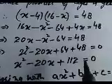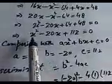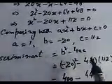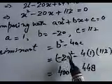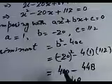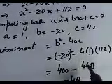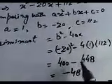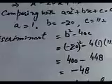Now we solve this equation to check if the situation is possible. Comparing with ax square plus bx plus c equal to zero: a equals 1, b equals minus 20, c equals 112. Now finding the discriminant: b square minus 4ac equals (minus 20) square minus 4 times 1 times 112, which equals 400 minus 448 equals minus 48. Since discriminant is less than zero, the quadratic equation has no real roots.